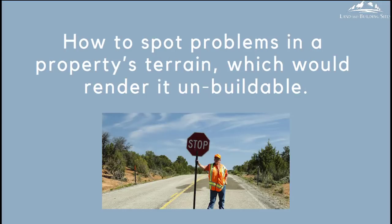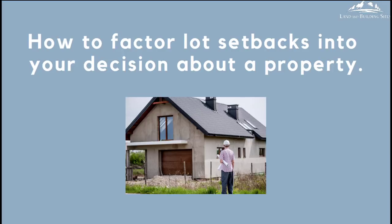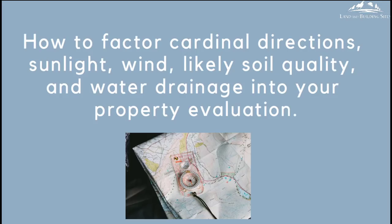How to spot problems in a property's terrain which would render it unbuildable. Things to consider about your property's shape, whether it's square, rectangular, or another shape. How to factor lot setbacks into your decision about a property — if you plan to build, especially on a smaller lot, you need to know about setbacks. We'll show you how to find out what they are and how to factor them into your decision about whether you can fit your house or building on the lot. How to factor cardinal directions, such as the direction of sunlight or wind, as well as likely soil quality and water drainage into your property valuation.